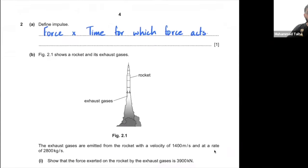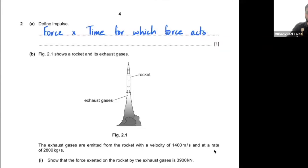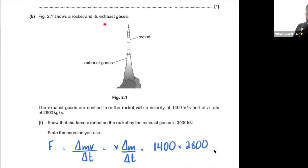Question 2a: define impulse. Impulse is defined as force multiplied by the time for which the force acts. Writing this as an equation with a multiplication sign in the middle is acceptable to the examiner. Figure 2.1 shows a rocket and its exhaust gases. Exhaust gases are emitted with a velocity of 1,400 m/s at a rate of 2,800 kg per second.